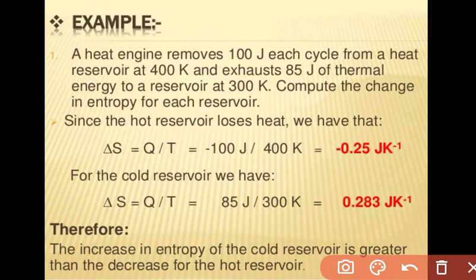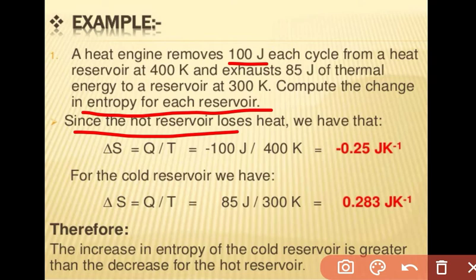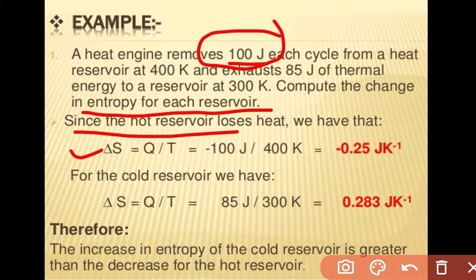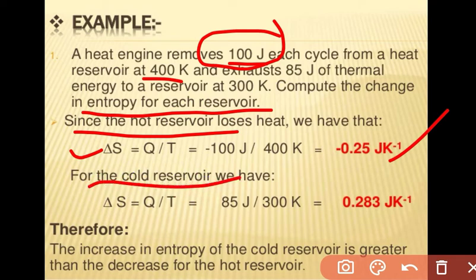For example, a heat engine removes 100 joules each cycle from a heat reservoir at 400 kelvin and exhausts 85 joules of thermal energy to a reservoir at 300 kelvin. Compute the change in entropy for each reservoir. Since the hot reservoir loses heat, we find ΔS = Q / T = −100 / 400, so the change in entropy is −0.25 joules per kelvin.